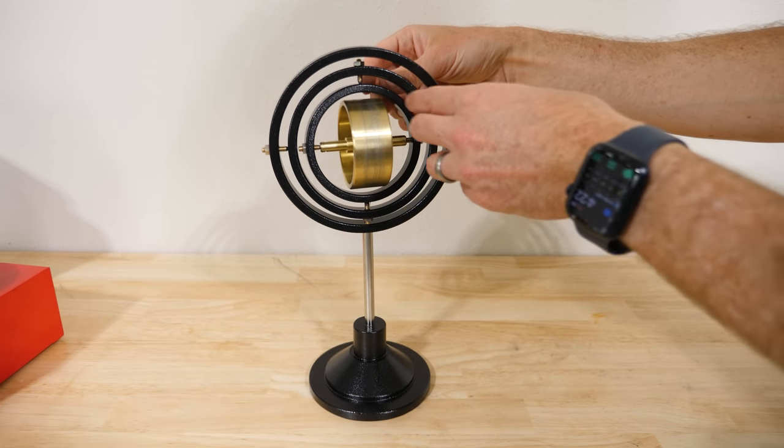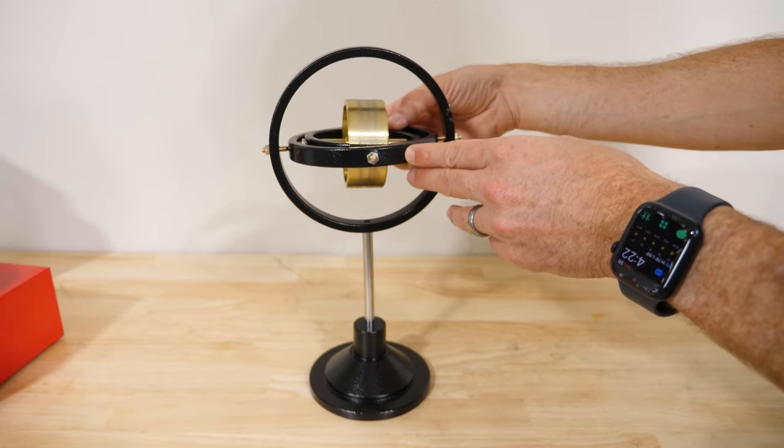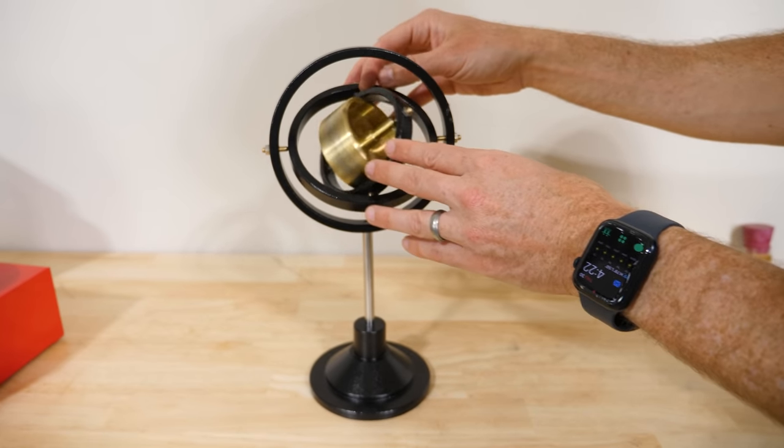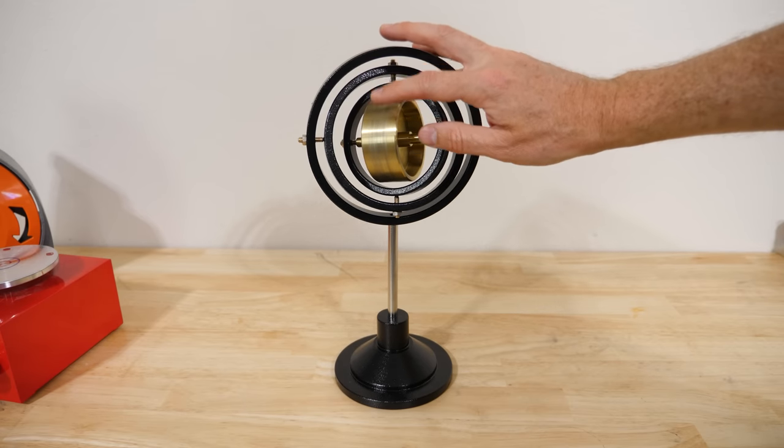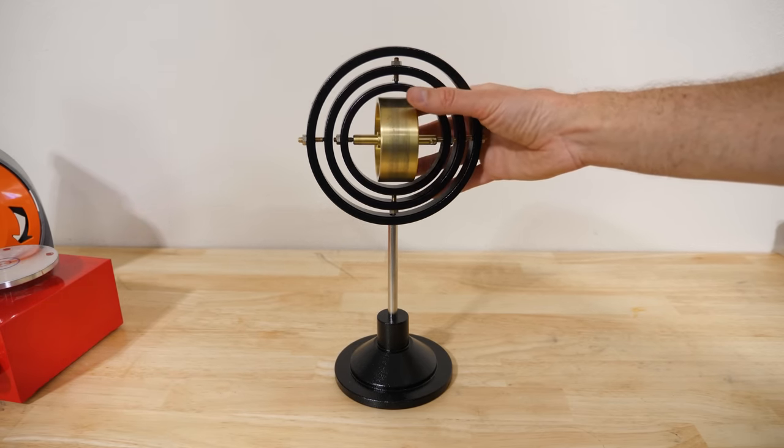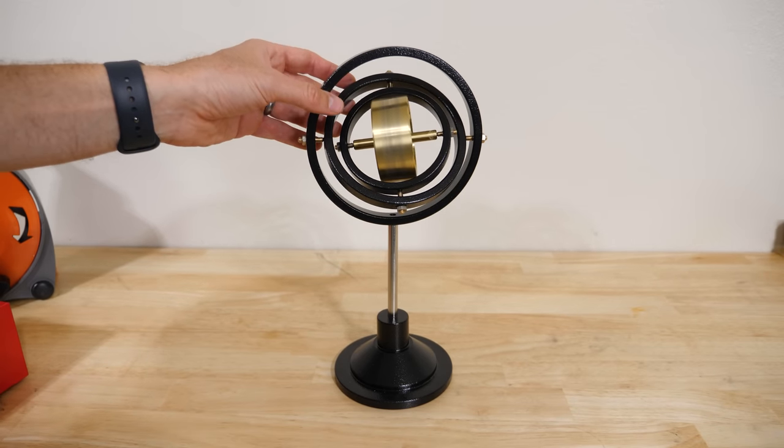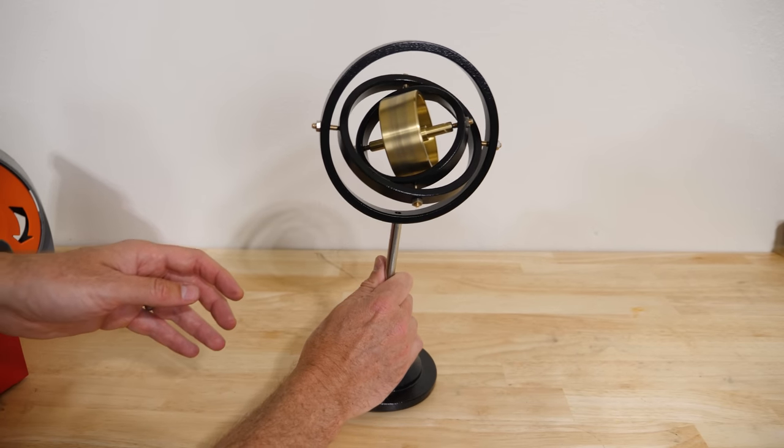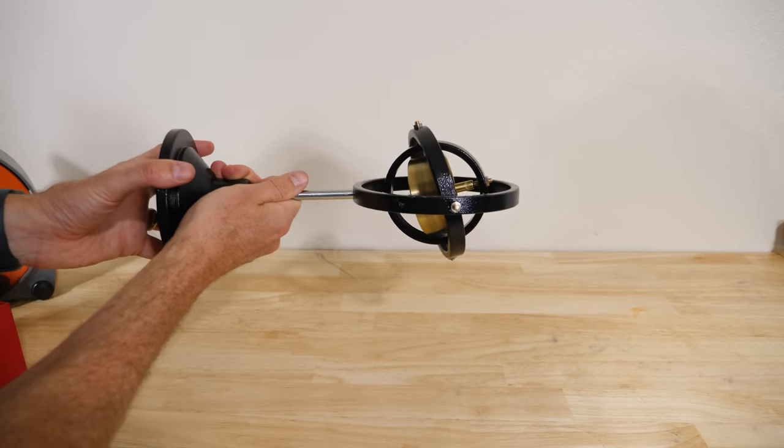What I have here is a gyroscope that's able to move freely in any of the X, Y, and Z coordinates. But now watch what happens when I get this middle cylinder spinning really fast so that it has gyroscopic motion. So no matter which way I spin it, it stays pointing the same direction.